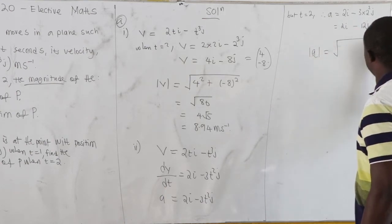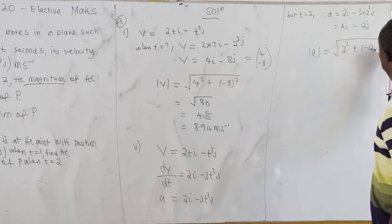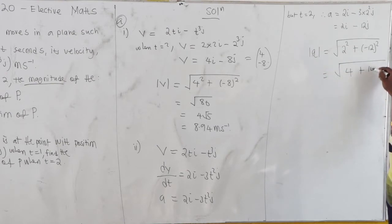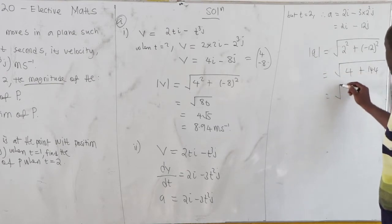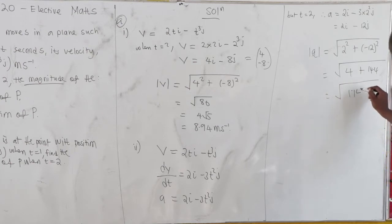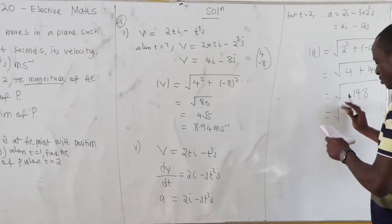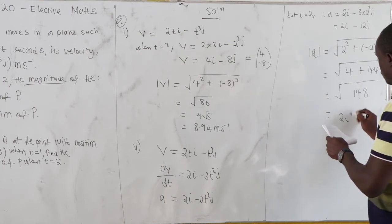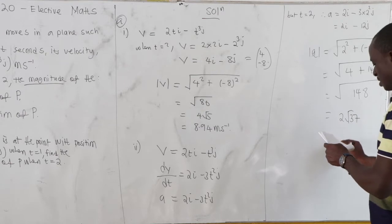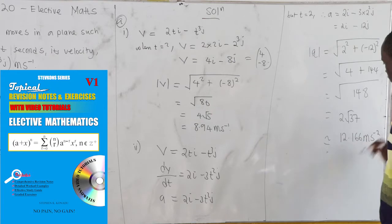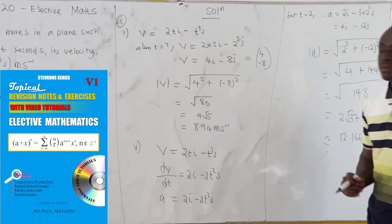The magnitude of the acceleration is the square root of 2 squared plus negative 12 squared, so we have the square root of 4 plus 144, which is the square root of 148. This equals 2 root 37, approximately 12.166 meters per second squared.